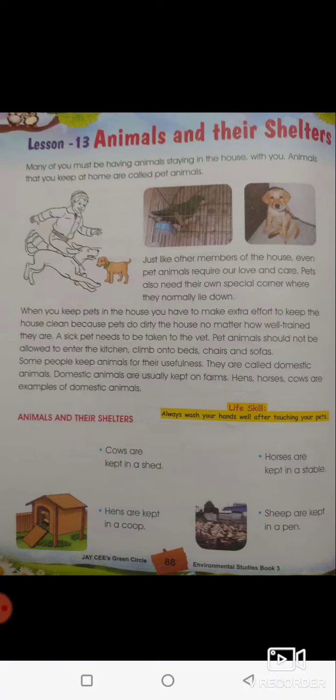Hi students. In our last class we learnt animals and their shelters. Shelters means the place where animals live. We live in our houses, and houses are our shelters. The same way, animals have their own different shelters — like birds live in a cage, cows live in a cow shed, and dogs live in a kennel, or we keep them in a separate place in our house. Such places are called shelters.